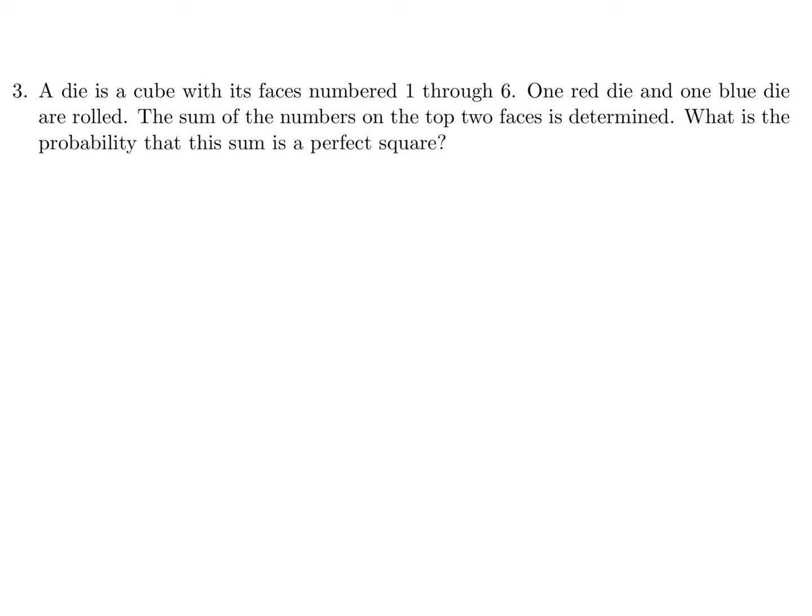A die is a cube with its faces numbered one through six. One red die and one blue die are rolled. The sum of the numbers on the top of the two faces is determined. What is the probability that the sum is a perfect square? Probability questions, numerator and denominator. The denominator is the total, and the numerator is our specific condition. Now, what is the total?